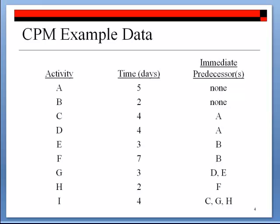This example shows the information we need in CPM. In this project, nine activities along with their activity time and immediate predecessors have been identified after step one of CPM. For instance, activity G needs three days and follows activities D and E immediately. Next, I will show you how to construct a CPM network or precedence diagram, calculate earliest start and finish times, calculate latest start and finish times, determine the slack of each activity, and identify the critical path.